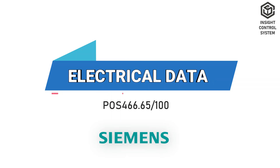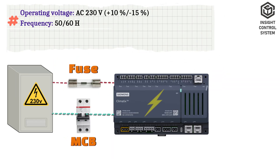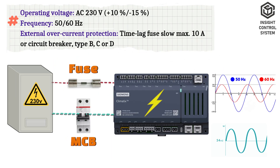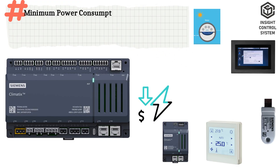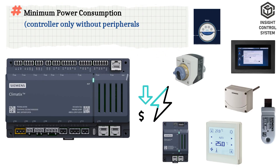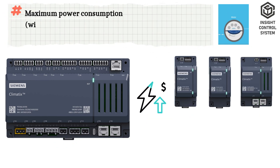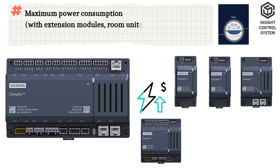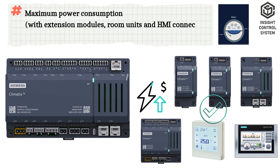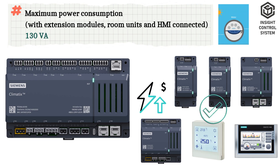Electrical data: Operating voltage is AC 230 volt, frequency is 50 or 60 Hz. Minimum power consumption is 4.5 watts (controller only, without peripherals connected). Maximum power consumption is 130 VA, with extension modules, room units, and HMI connected.